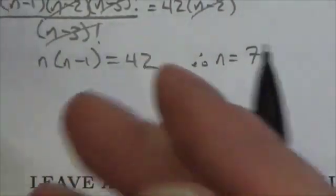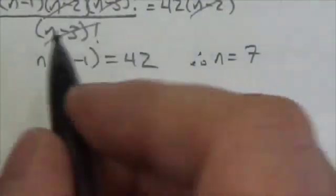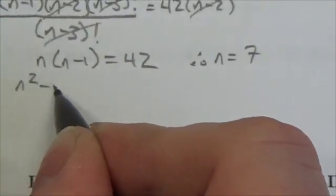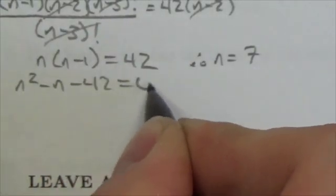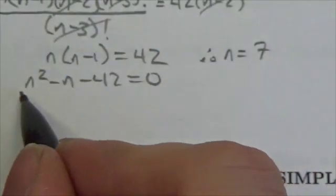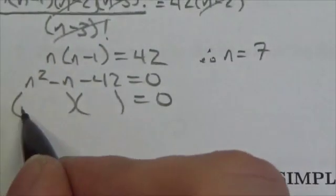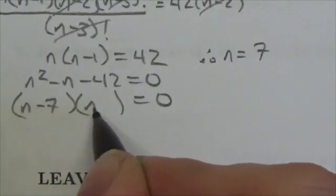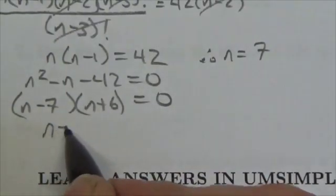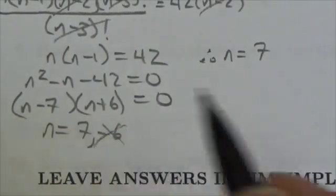By the way, answers in this chapter shouldn't end up as crazy decimals — that's the nature of this material. But if you're not comfortable with the mental math approach, just multiply out, bring the 42 over to get 0, then factor. Your factors of 42 that add to negative 1 are negative 7 and positive 6, so n equals 7 or negative 6. Since negatives don't count, n equals 7.